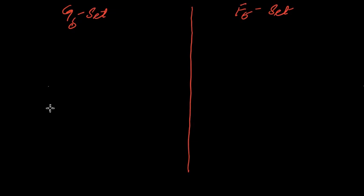Dear students, now we have two important concepts — we define G-delta set and F-sigma set. These are prime notions in measure theory, along with open sets on the real line, open intervals, closed intervals, and so on. Now, any set will be called a G-delta set if it can be expressible as a countable intersection of open sets.